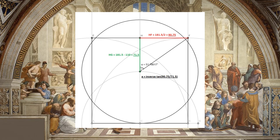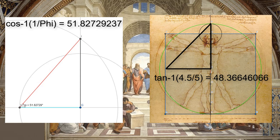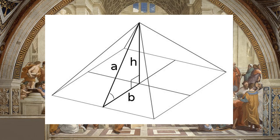This is 99.882 percent of the slope of a golden right triangle. Numerous other people have also pointed out the similarity between this angle and the slope of the Great Pyramid of Giza.